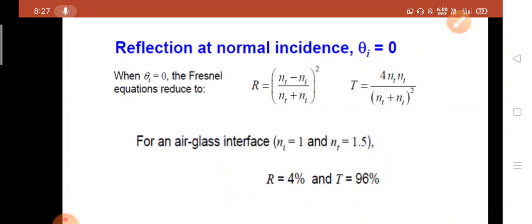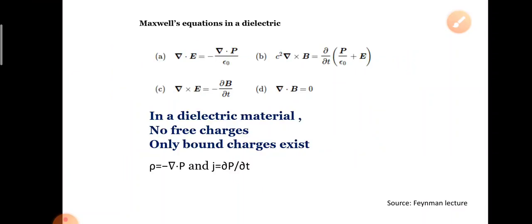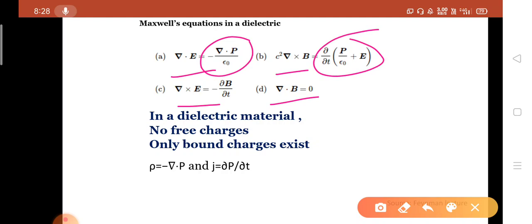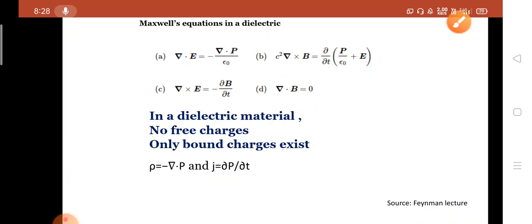We will now understand what refractive index means and how it decides the transparency, reflectivity, or transmittivity of any material. Applying Maxwell's equations in a dielectric medium — where there are no free charges, only bound charges — the equations become: ∇·E = −∇·P/ε₀, c·∇×B = ∂/∂t(P/ε₀) + E, ∇×E = −∂B/∂t, and ∇·B = 0. Here ρ is replaced by −∇·P and J by ∂P/∂t, where P is the polarization.